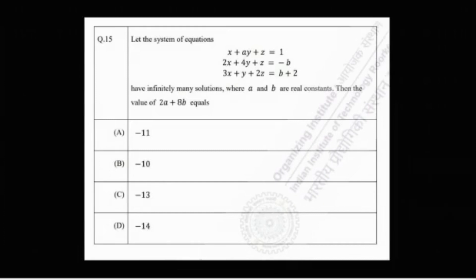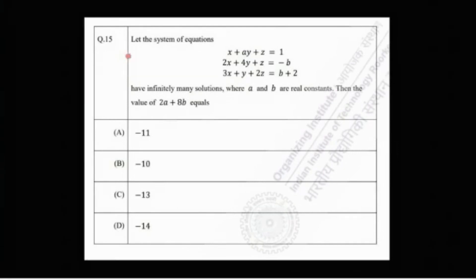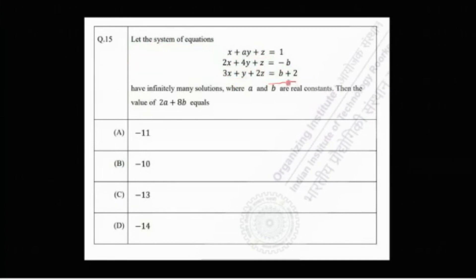Welcome to Chintha Statistics and Data Science. Today we are going to solve this problem from IIT JAM 2022, Problem 15. The problem says: let the system of equations x + ay + z = 1, 2x + 4y + z = -b, and 3x + y + 2z = b + 2 have infinitely many solutions, where a and b are real constants. Then the value of 2a + 8b equals — there are four options.